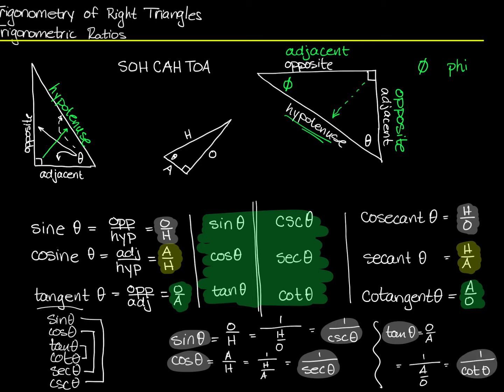Cosine is one over secant, sine is one over cosecant. Equally, cotangent is one over tangent, and cosecant is one over sine. Those are some very interesting and really very important relationships — we'll be seeing those again.